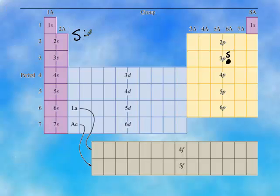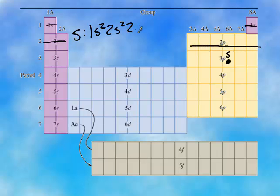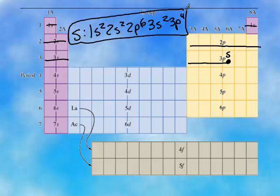Sulfur is located there. So we're going to go through the periodic table. First it's 1s. Then it's 2s. 2p, 1, 2, 3, 4, 5, 6. 3s2. 3p, 1, 2, 3, 4. And that's your answer.